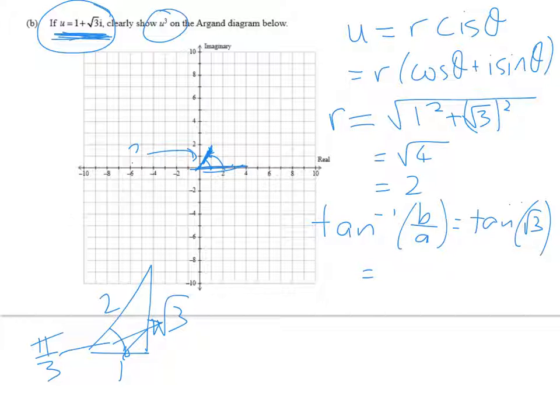So the angle whose tan is root 3 is pi on 3, or 60 degrees. And the modulus is 2.